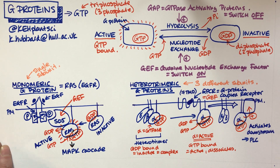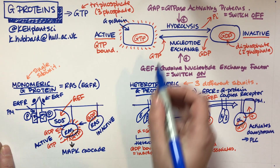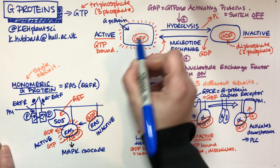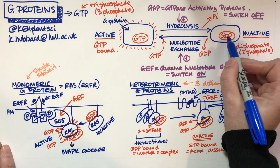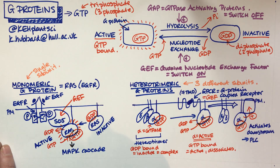G proteins can be a little bit tricky to get your head around, but the most important thing is: if it's bound to GTP, it's active; bound to GDP, it's inactive.